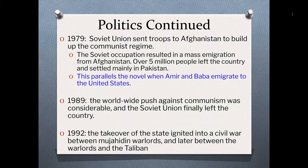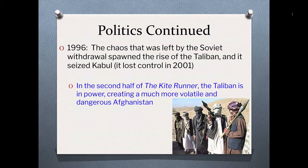A decade later, there was a worldwide push against communism, so the Soviet Union ultimately left the country and left it in chaos. There were all these warlords established throughout the countryside and a giant civil war ensued. By 1996, that chaos spawned the rise of the Taliban, which seized Kabul. You will also see that reflected in The Kite Runner in the second half when the Taliban is in power and Amir returns to Afghanistan.